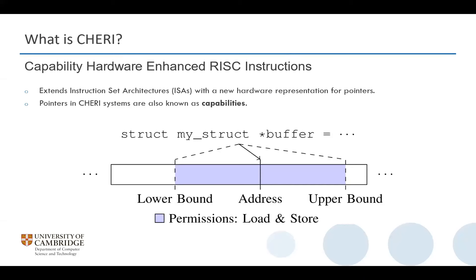So first of all, briefly, what is CHERI? It stands for Capability Hardware Enhanced Risk Instructions and it extends existing ISAs with a new hardware representation for pointers, also known as capabilities. As you can see in the diagram here, you have a C pointer to a structure. Under a conventional ISA it would just be a 64-bit integer address pointing to somewhere in memory. Under CHERI, however, you also have additional information contained in the pointer such as the lower bound and upper bound within which the pointer can be dereferenced. The pointer also contains permission bits such as load, store, and execute, dictating what you can do with this particular pointer.